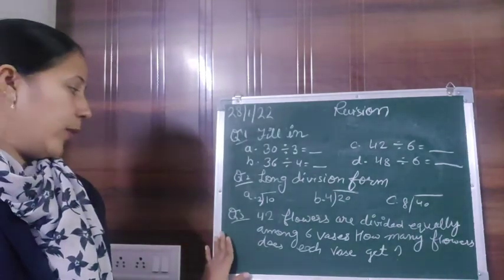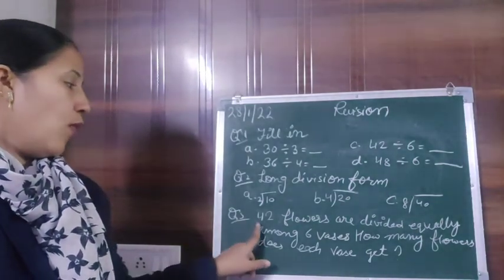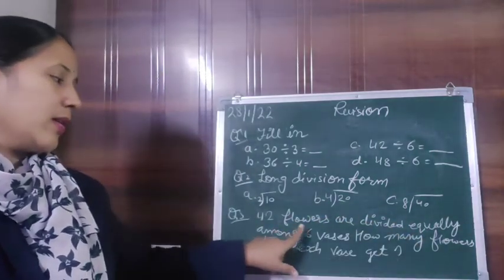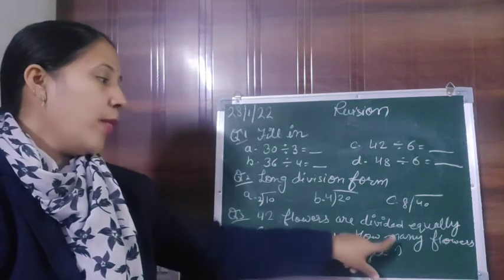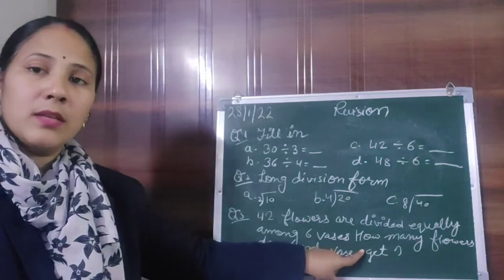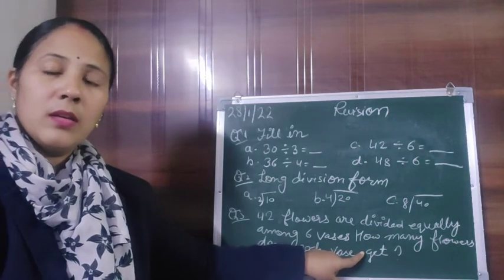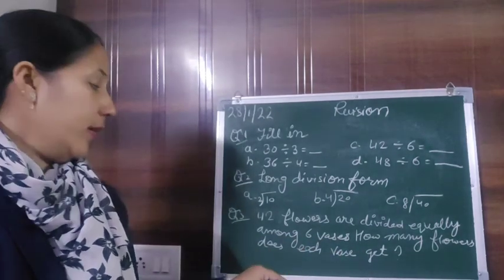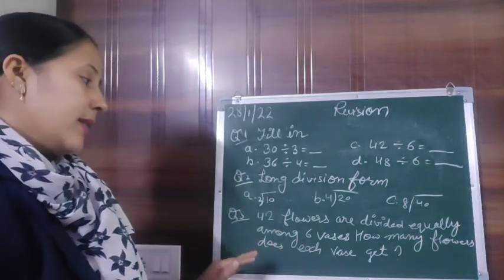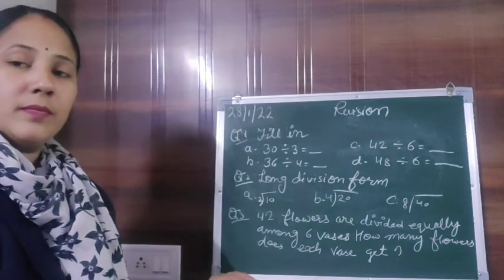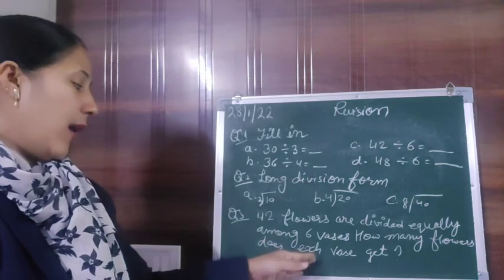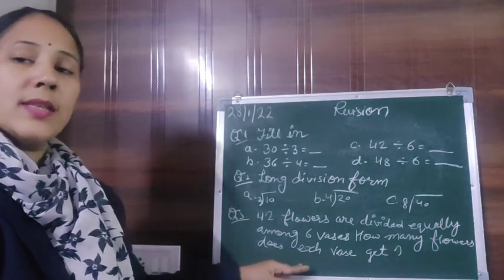Let's see question number 3. 42 flowers are divided equally among 6 vases. How many flowers does each vase get? So children, here we will divide 42 by 6. 6 sevens are 42. So seven flowers each vase will get.